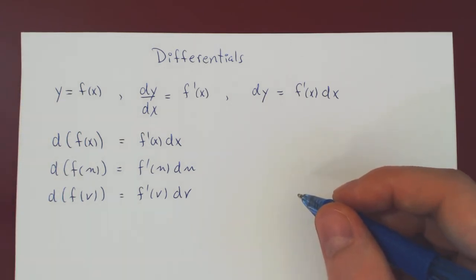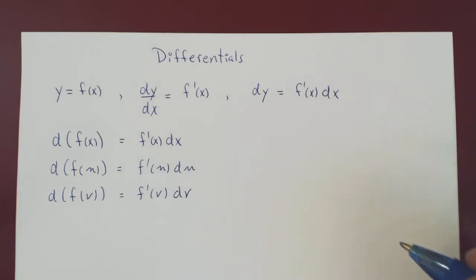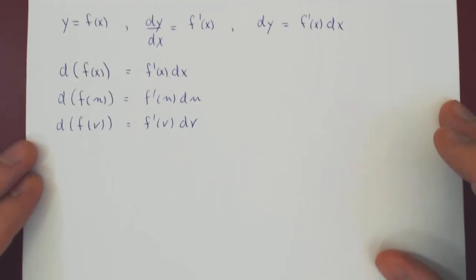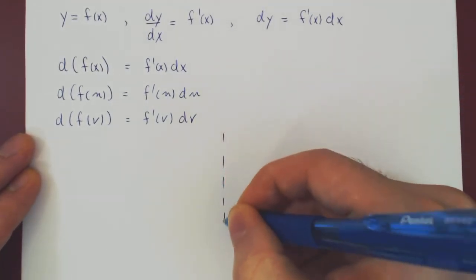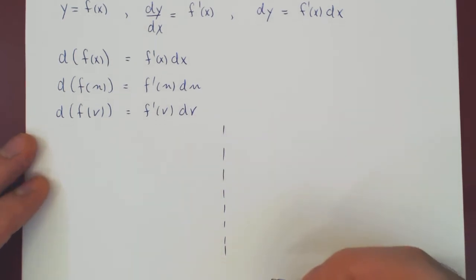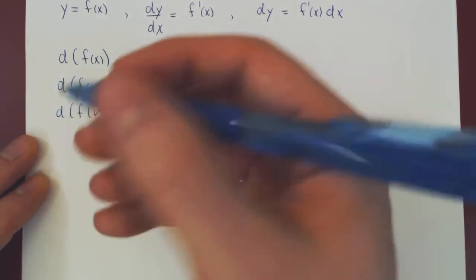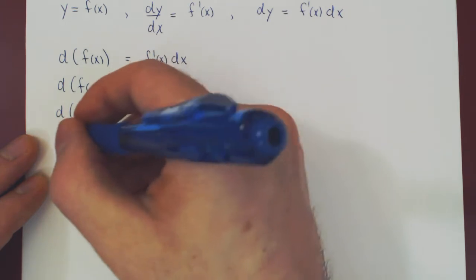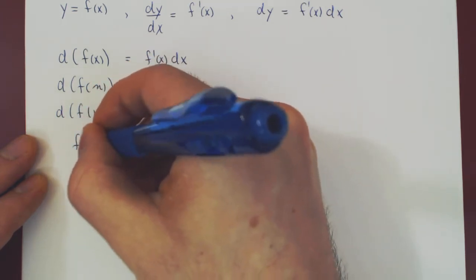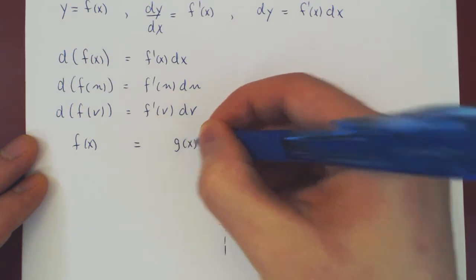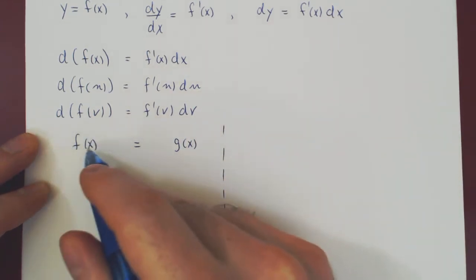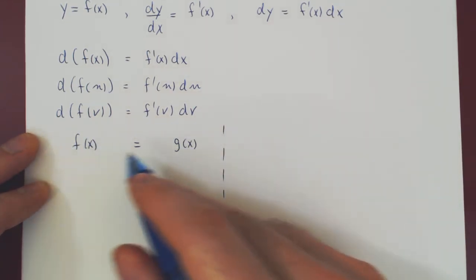Now the question is: if two functions are equal, do they have the same differential? We'll look at two cases. The first is a sort of introduction and is rather easy. Suppose we have two functions that are equal and both are functions of x — so f of x equals g of x, where both f and g are functions of x and they are equal as functions of x.